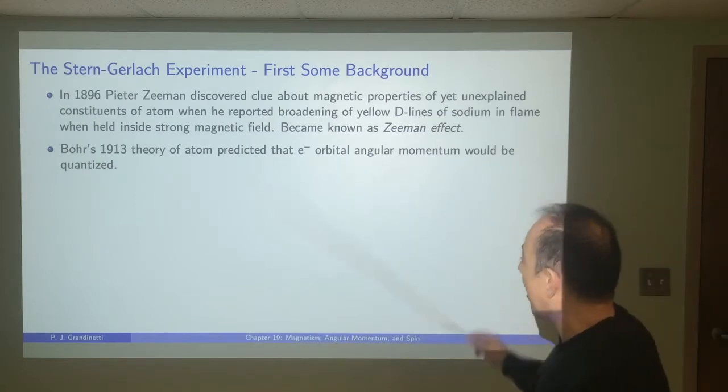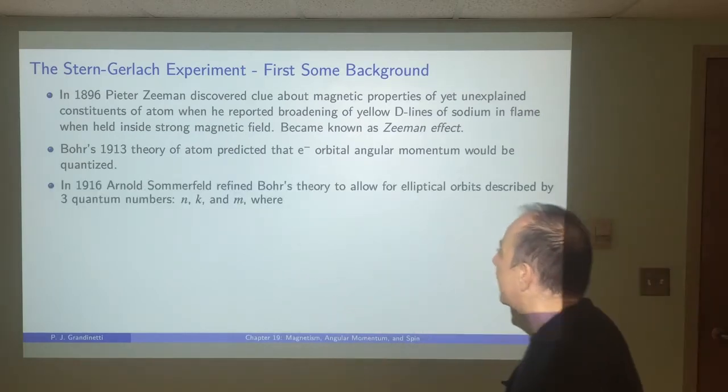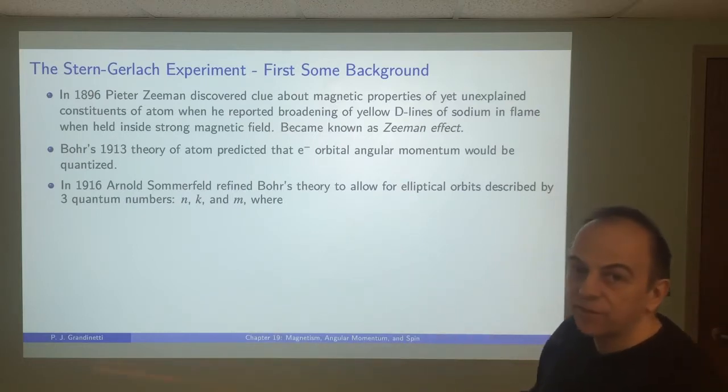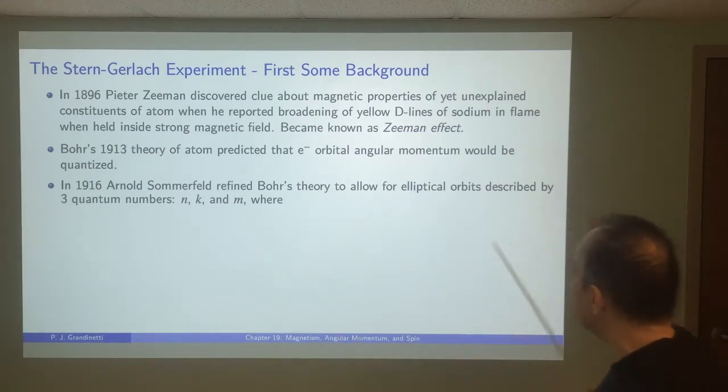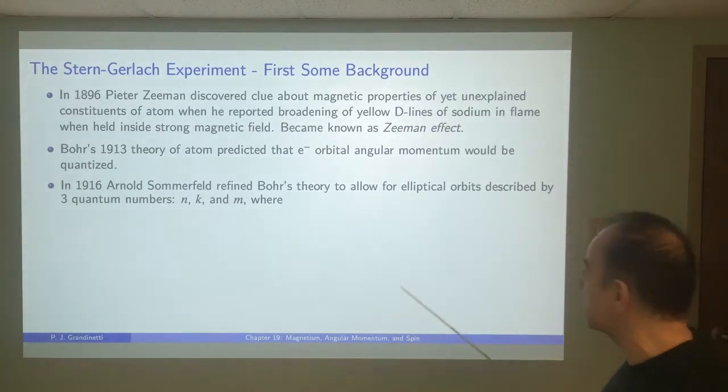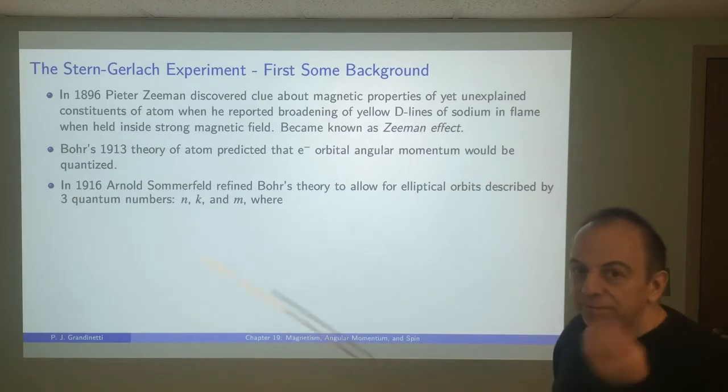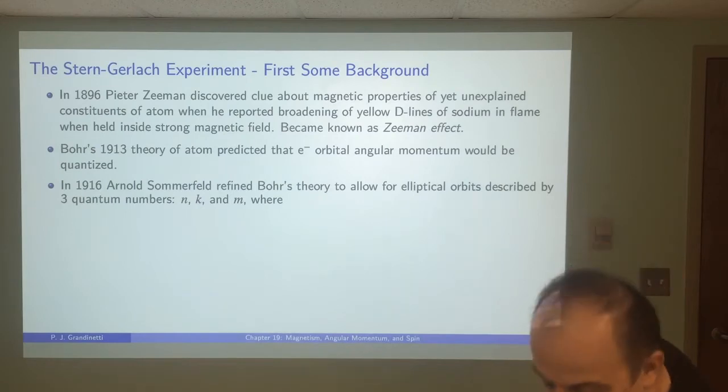This became known as the Zeeman effect. There was something about the constituents of the atom that were interacting with magnetic fields. In Bohr's 1913 theory of the atom, he predicted that the angular momentum would be quantized. So that was an important first step. And later, after Bohr, Sommerfeld was taking Bohr's theory and trying to refine it. This was before Schrodinger.